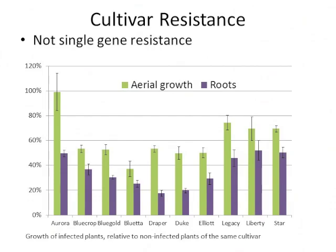Aurora, for some reason, didn't have any above-ground growth reduction in this cultivar screening. Duke and Draper are amazingly susceptible. Liberty is a little bit more resistant.